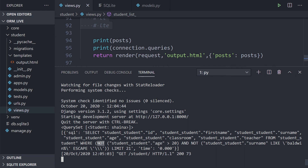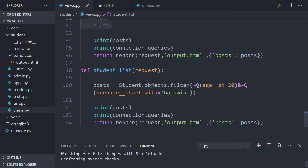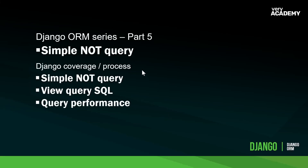That was a simple example of using NOT queries in Django — hopefully that's clear. If you have any questions please leave a comment and I'll happily answer them. Thank you very much for watching. That covered simple NOT queries utilizing Django's `exclude()` and Q objects. It would be great to get your feedback on these tutorials, and hopefully I'll see you in the next one.